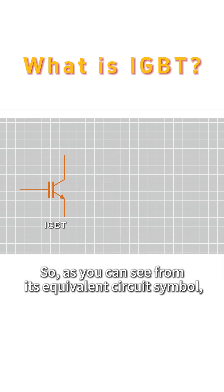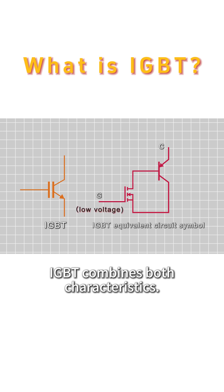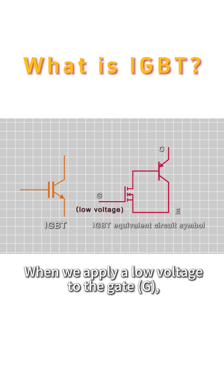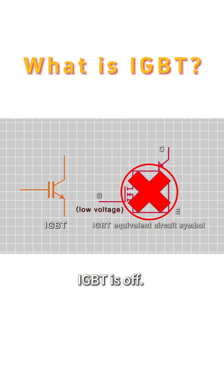So, as you can see from its equivalent circuit symbol, IGBT combines both characteristics. When we apply a low voltage to the gate, IGBT is off.